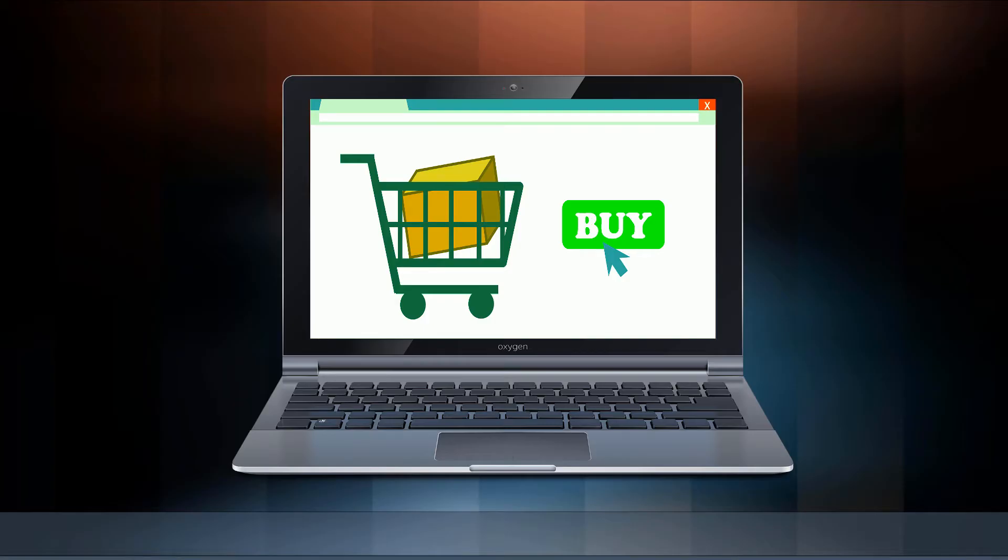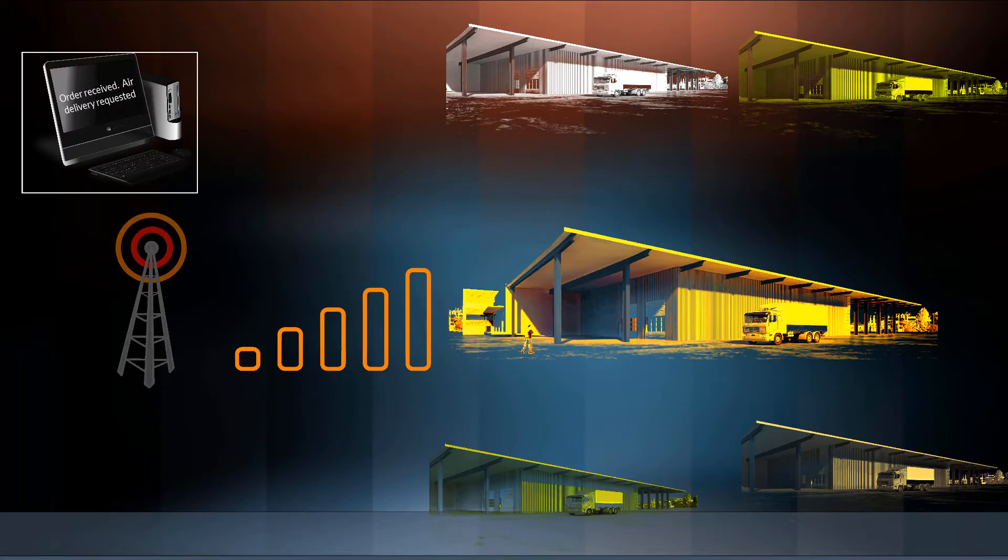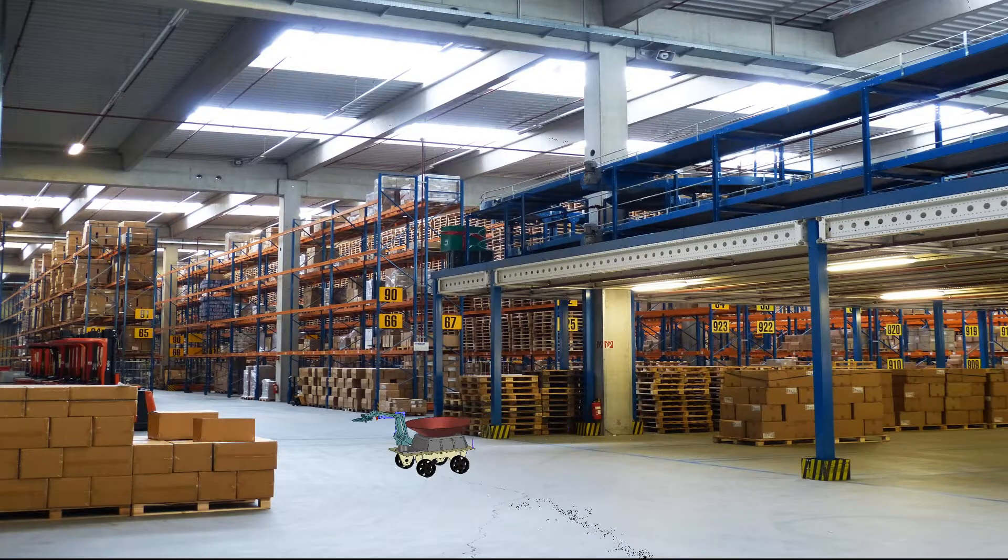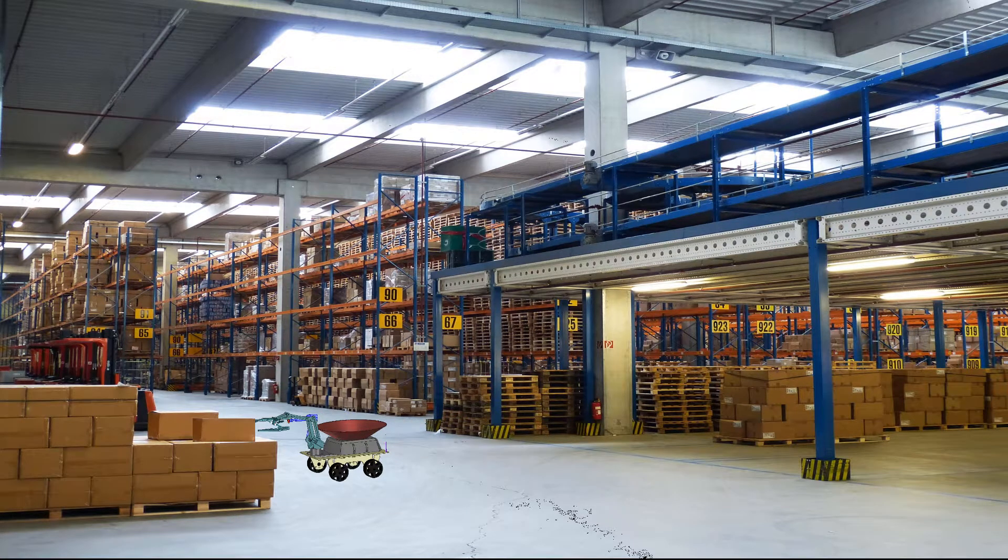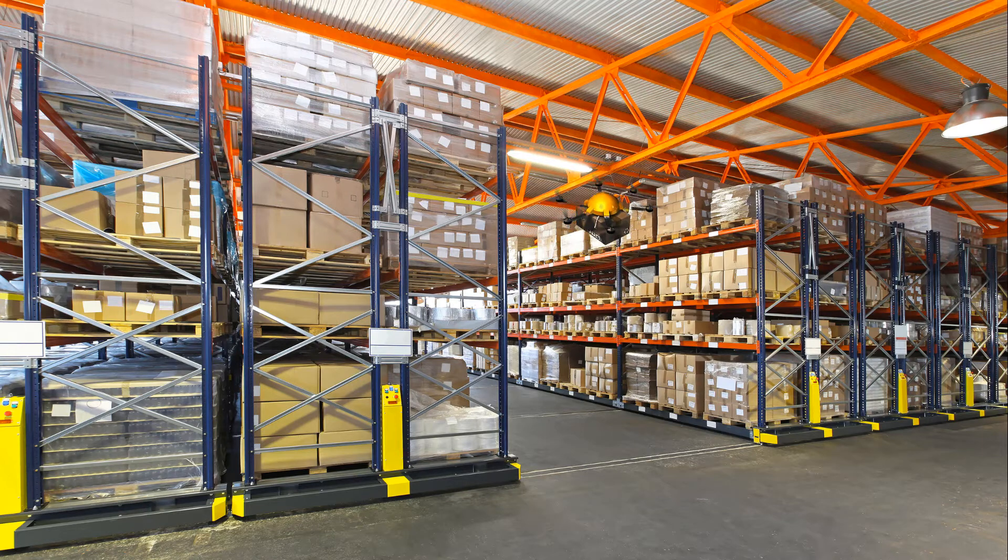Imagine that you place an online order and choose the air delivery option. Your order is relayed to the nearest warehouse. Upon receipt, a robot fetches the goods from the correct shelf and transports them to the shipment area for packaging. A drone takes off automatically with your package.